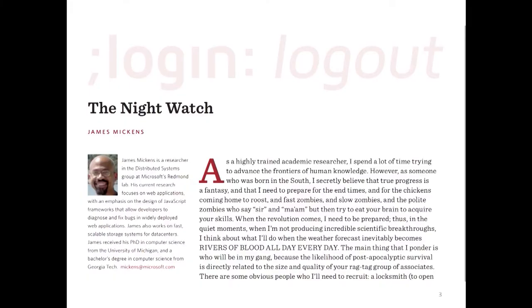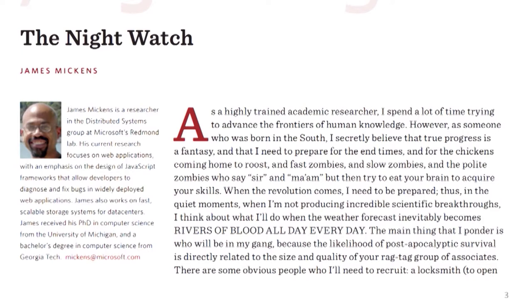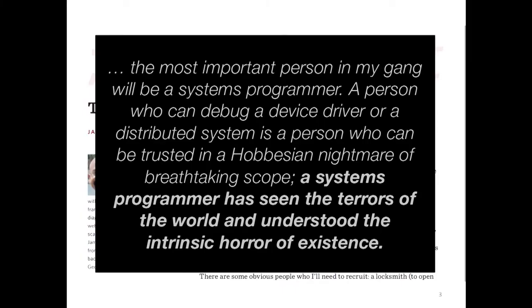First, I want to talk about this column that this guy writes. His name is James Mickens, and he used to be a researcher at Microsoft Research, but he's going to be starting as a professor at Harvard in the fall. He writes this column which is absolutely hilarious for the USENIX login research publication. There's one column in particular he wrote called The Night Watch. It's about a zombie apocalypse, and in it he talks about who he would like to have with him when the zombie apocalypse comes. And this is what he says: "The most important person in my gang will be a systems programmer. A person who can debug a device driver or a distributed system is a person who can be trusted in a Hobbesian nightmare of breathtaking scope."